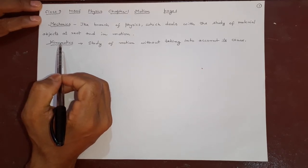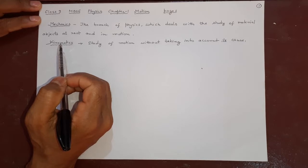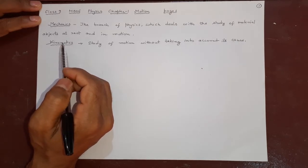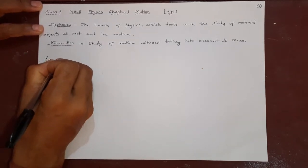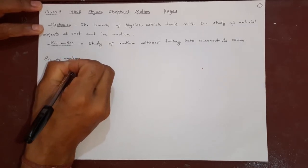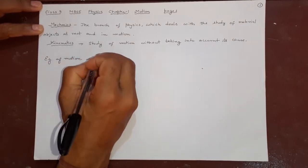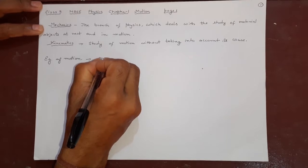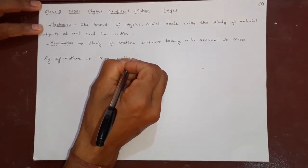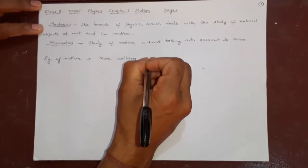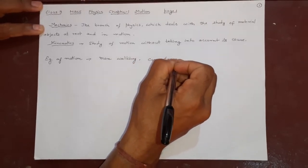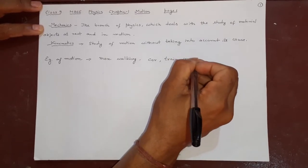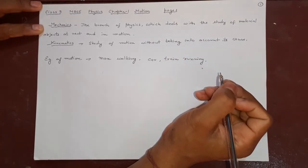In our day-to-day life we will see so many things running and moving — like buses, cars, man, ball rolling. Everything — that is the example of motion. Motions are so many. Man walking, car, train running — all these are examples of motion.